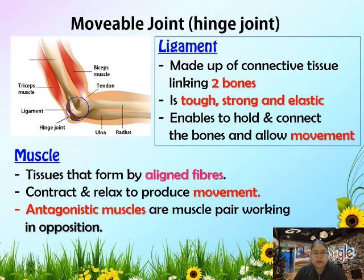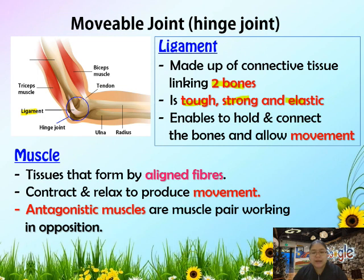Now let's see the function of the ligament for the hinge joint. The ligament is made up of connective tissue, linking two bones. It is tough, strong, and also elastic, and is able to hold and connect the bones and allow movement. That is the function of the ligament.